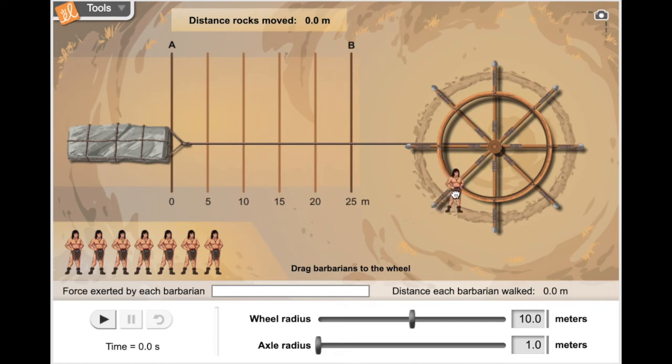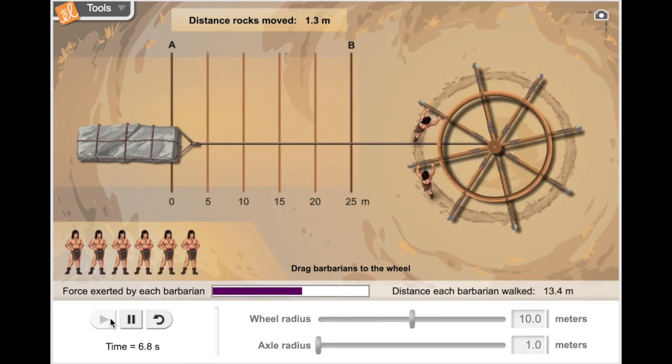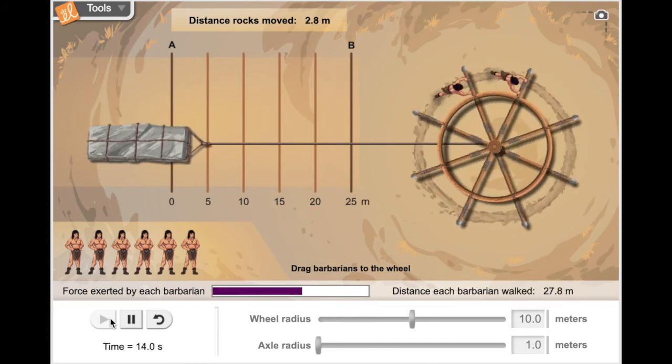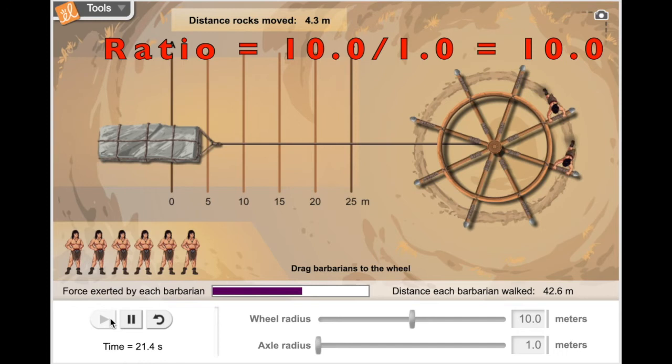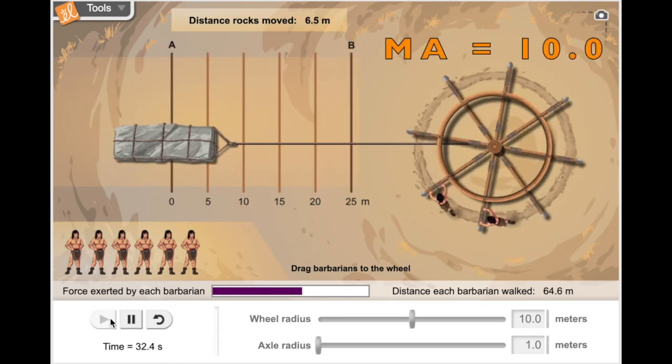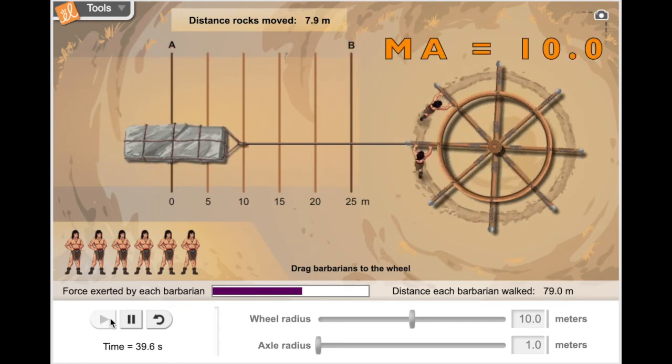Now, once again, I want to find the minimum number of barbarians needed to move this load. The wheel-to-axle ratio is 10. That means it's going to multiply their force by 10 times.